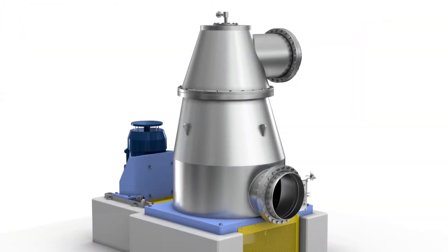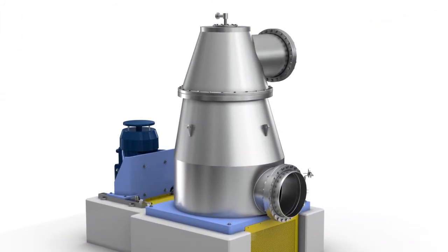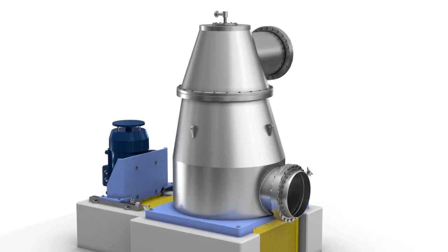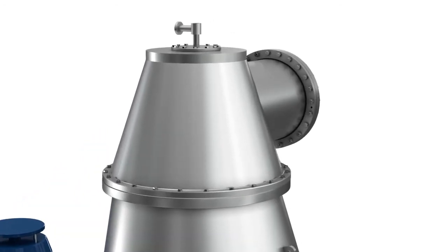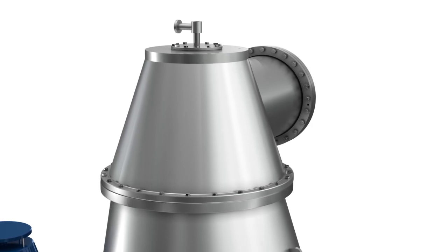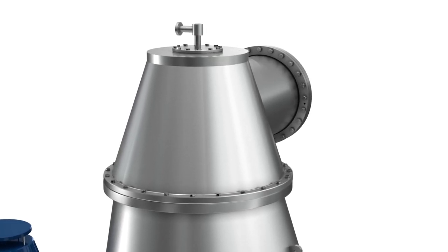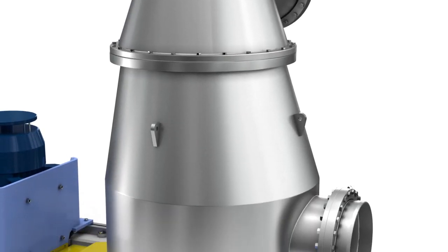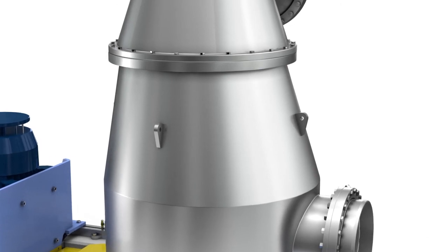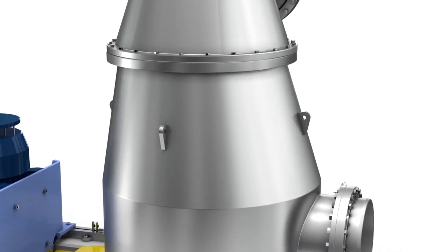The reworked design of IntegraGuard adds energy efficiency to proven technology. The flow-optimized geometry of the head section reduces the pressure drop in the machine. A homogeneous screen passing velocity is achieved as a result of the conical housing design.